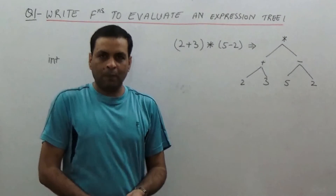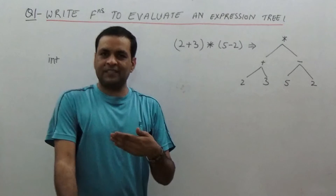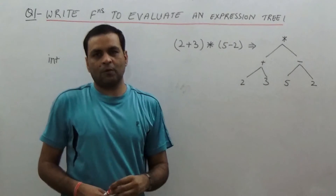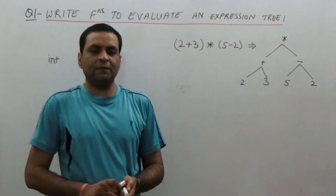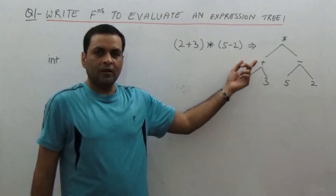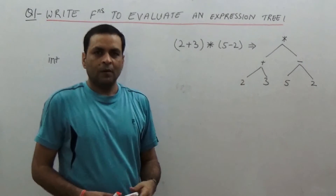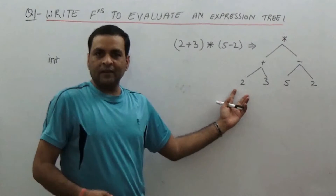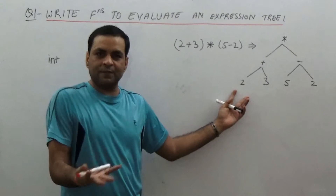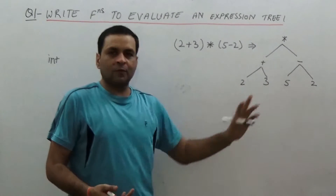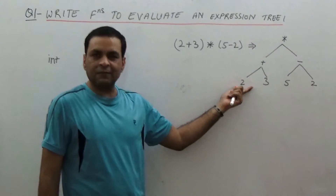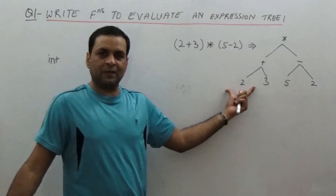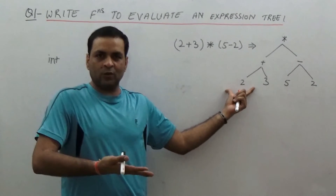The operator needs to be applied on certain operands, and the operands will always be children of that operator. If it is a binary operator, there will be two children of the operator node. If it is a unary operator, there will be one child. Operator nodes can never be leaf nodes because an operator needs operands. Operands, on the other hand, are values in themselves and exist as leaf nodes. So if it is a leaf node, we return the value; if it is a non-leaf node, we evaluate the left and right subtrees and apply the operation.